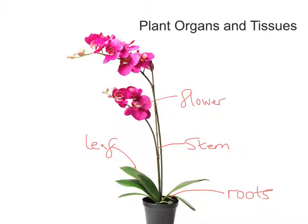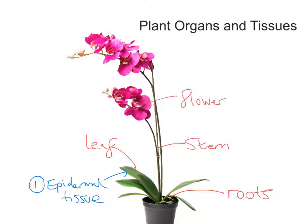Let's start with epidermal tissue. The first tissue we're going to mention is the epidermal tissue. Epidermal tissue is protective — it covers the root, it covers the stem, and it covers the leaves. Epi means sort of outside, so we're talking about an outer layer of cells. In another video on root hair cells, I've talked about epidermal cells and root hairs being extensions of those epidermal cells to increase the external surface area of the root. So we've got epidermal tissue there.